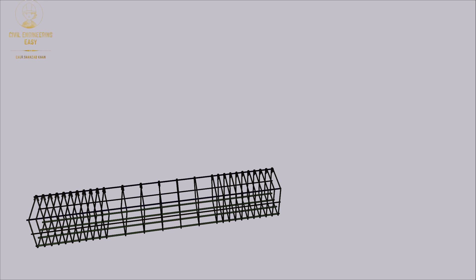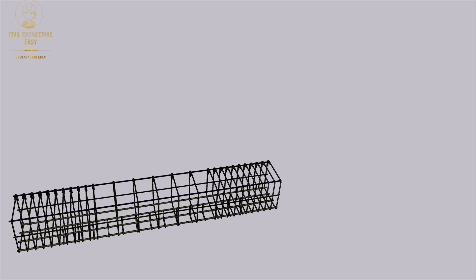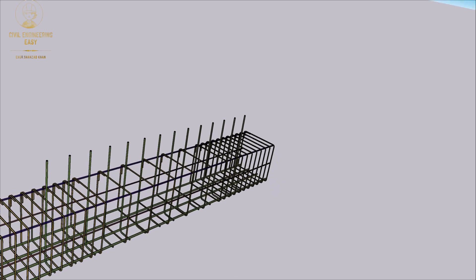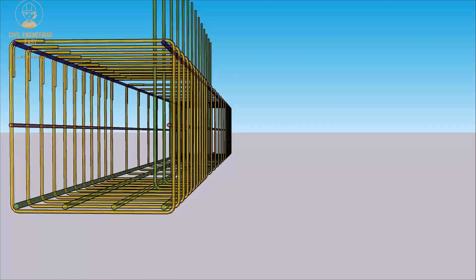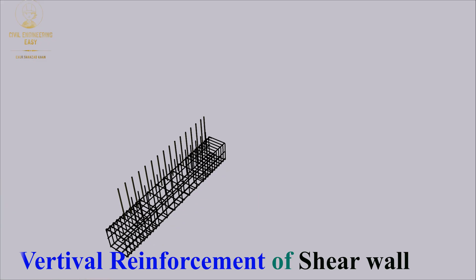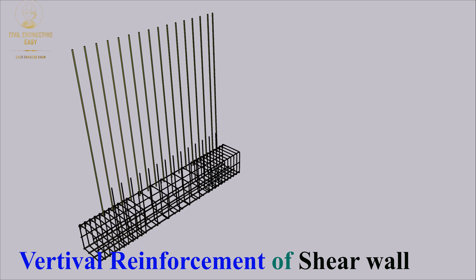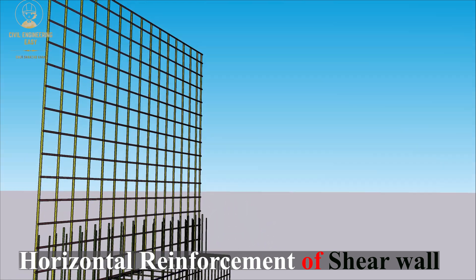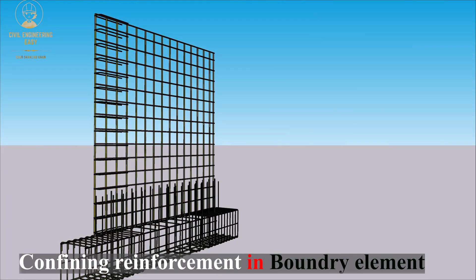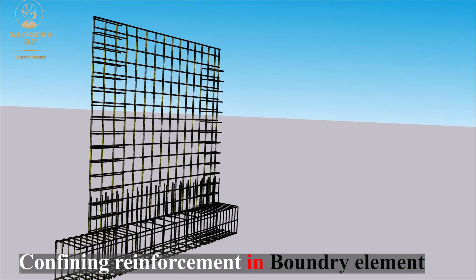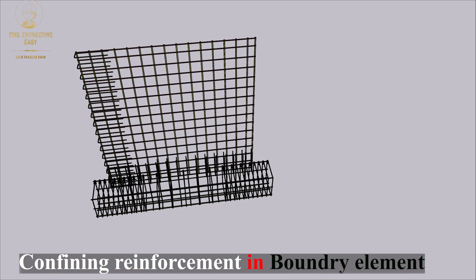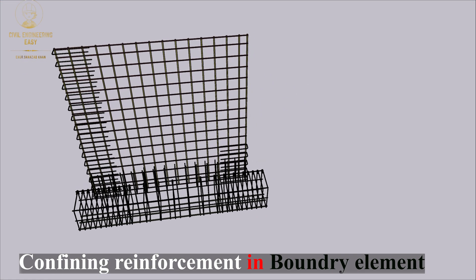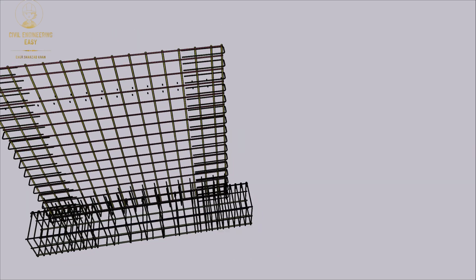Moving on, there are embedded bars in the shear wall along with vertical and horizontal reinforcement in both faces of the wall. There is also confining reinforcement in the boundary elements, and holding rebars for the top portion of the wall.